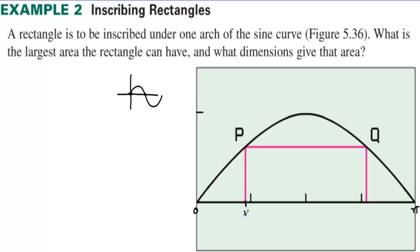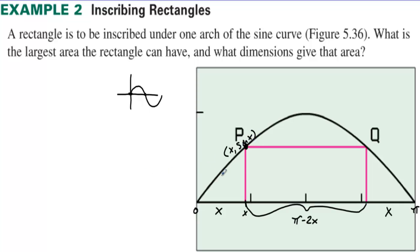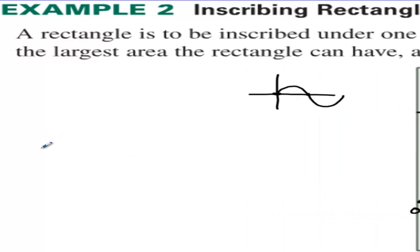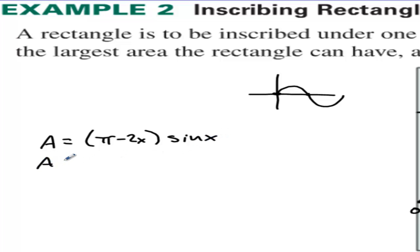If we pick some arbitrary x value, this distance is x, and the distance from this point to pi is also x. So the length of the rectangle is pi minus 2x. The point on the sine curve at that x value has a y-value of sine of x, so the height is sine of x. The area of this rectangle is the base (pi minus 2x) times the height (sine of x).